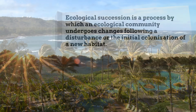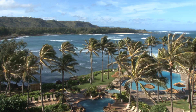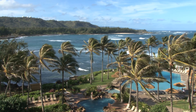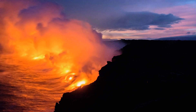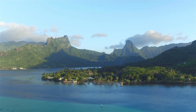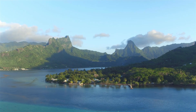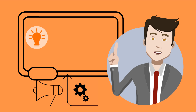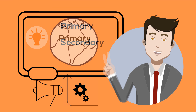For example, the islands of Hawaii were formed from volcanic activity. From their fiery start, over time they became tropical islands. There are two main types of succession: primary and secondary.